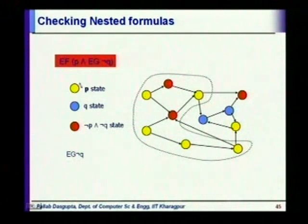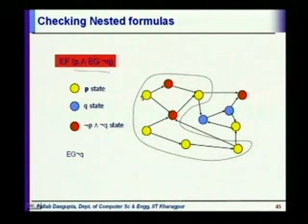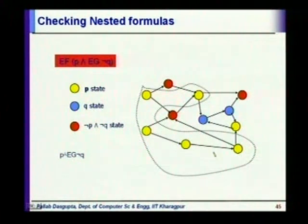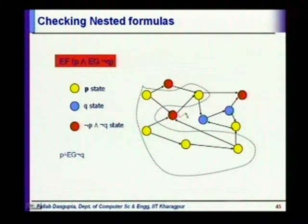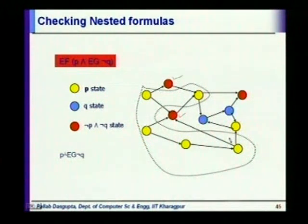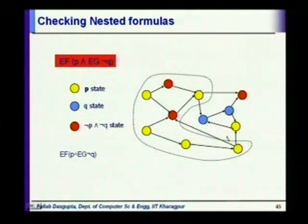Next, we take the intersection of the E G (not q) states with the p states, because we need p and E G (not q). Only the yellow ones within that region remain. Then, we need all states from which these states can be reached, because we want E F of this. A few additional states come in via reachable transitions. That gives us the final set of states satisfying E F (p and E G (not q)).